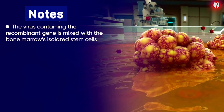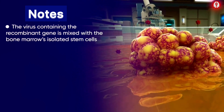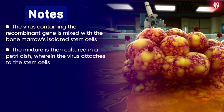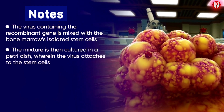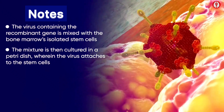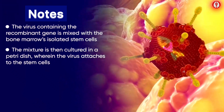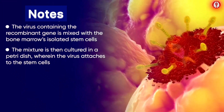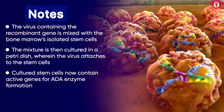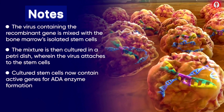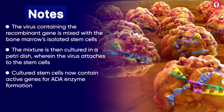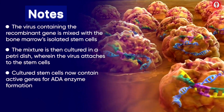is mixed with the isolated stem cells of the bone marrow and the mixture is then cultured in a petri dish. Here the virus attaches to the stem cell. Cultured stem cells now contain active genes for ADA enzyme formation.